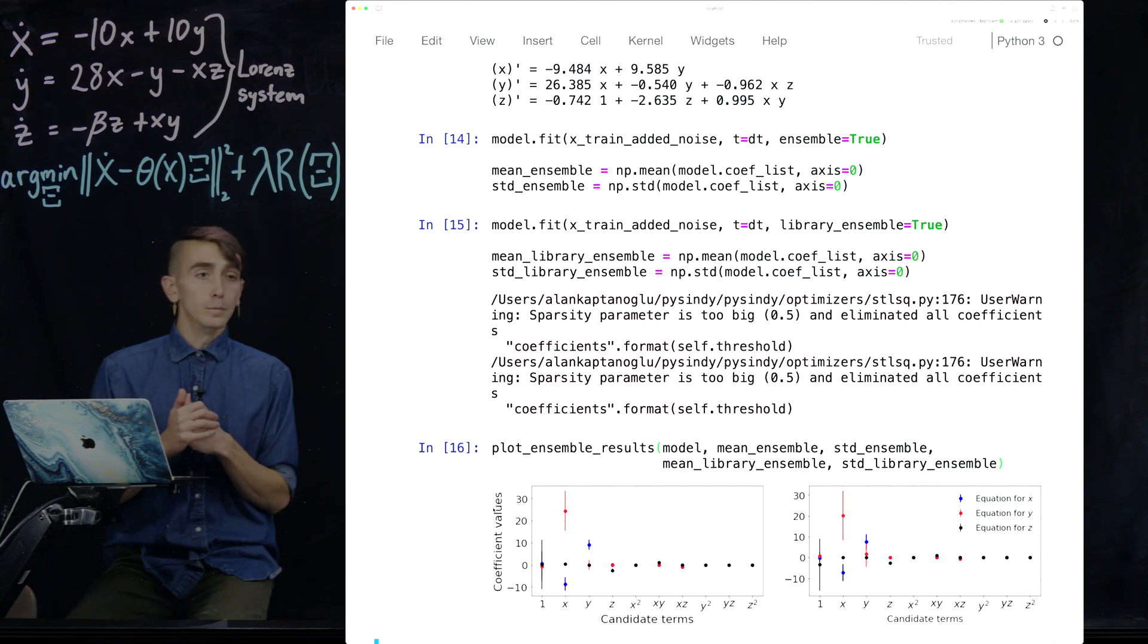The library we have is just a quadratic polynomial in x, y, and z, and lower polynomials. And you can see it's basically picking out the right terms.